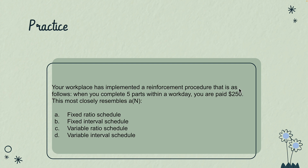Last question: 'Your workplace has implemented a reinforcement procedure as follows: when you complete five parts within a workday, you are paid $250.' This most closely resembles a fixed ratio schedule, fixed interval schedule, variable ratio schedule, or variable interval schedule? And for bonus points: completing five parts within a day — is that a rate or a count?